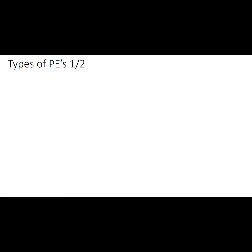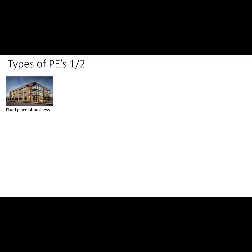The first type of PE is also the general type of PE: a fixed place of business. According to Article 5.1, a PE is a fixed place of business through which the business of an enterprise is carried on. There are three conditions. First, a place of business, i.e. a facility such as premises or machinery or equipment. Second, it must be fixed, i.e. it must be a distinct place with a certain degree of permanence.